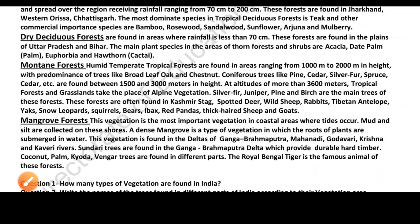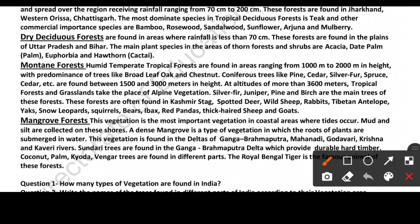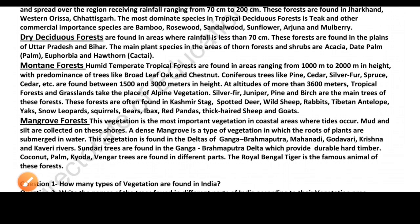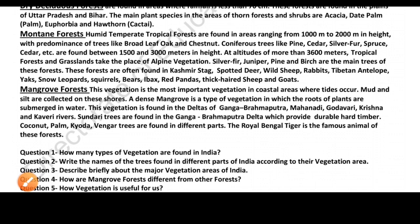Next is the Dry Deciduous Forest. In areas receiving less than 70 cm of rainfall, we find Thorn Forests. These are mainly found in Uttar Pradesh and Bihar. The main plant species here are acacia, date palm, hawthorn, cactus, and euphorbia.